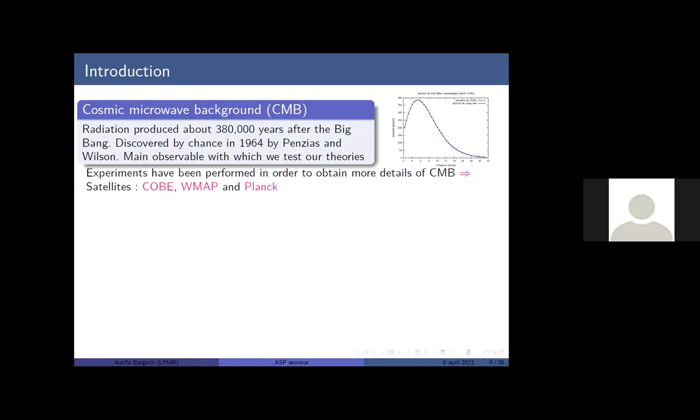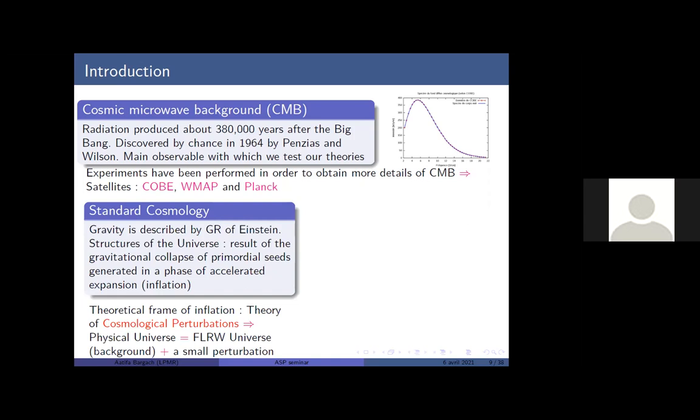Now, in order to describe our universe, we have what we call the standard cosmological model. It mostly relies on scenarios — it's not really a theory, it's a scenario. It is the Big Bang scenario, which gives the frame of the evolution of all structures. The standard cosmological model is based on general relativity of Einstein, one of the towering achievements of 20th century physics. According to the cosmological standard model, model structures are the result of the gravitational collapse of primordial seeds generated in a phase of accelerated expansion, which is inflation. Inflation makes the initial conditions of the standard Big Bang, and its theoretical frame is the theory of cosmological perturbations, in which we consider the universe as a background with small perturbations.